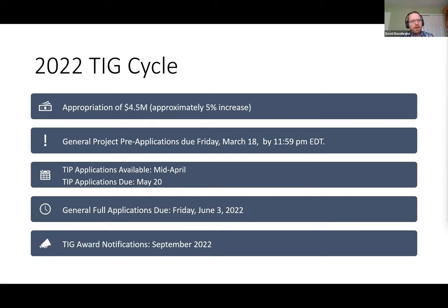I want to provide a quick update on where things stand with the 2022 TIG cycle. In the last week, we got some fairly good news: we have a final appropriation for the year of $4.5 million, which is actually a little bit more than the previous year. We received a more modest increase than some hoped, but more money is still more money. We're hopeful that will allow us to fund a few more projects.